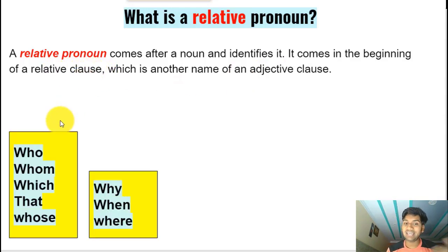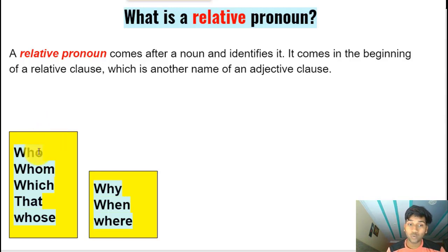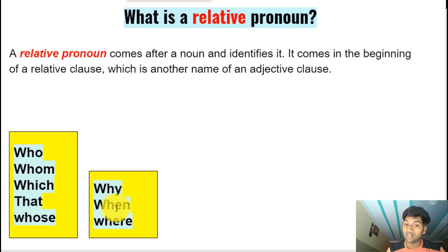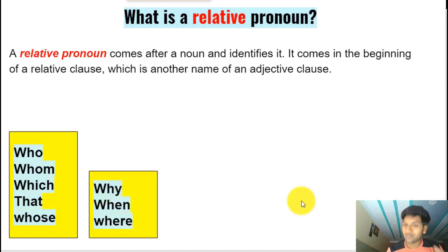These are the eight relative pronouns we have in English: who, whom, which, that, whose, why, when, where. The last three — why, when, where — are also called relative adverbs sometimes.